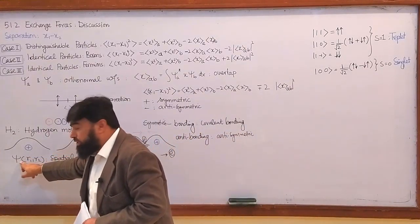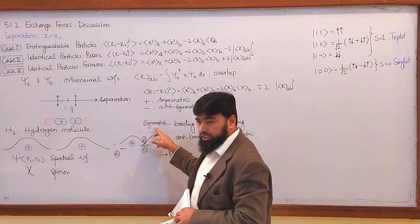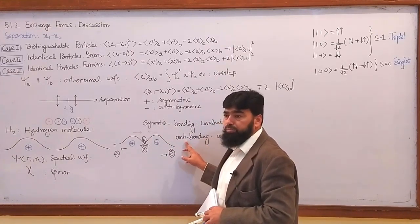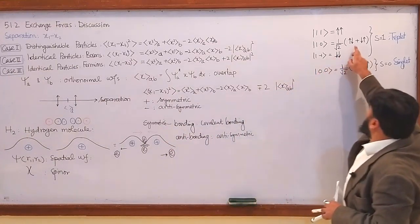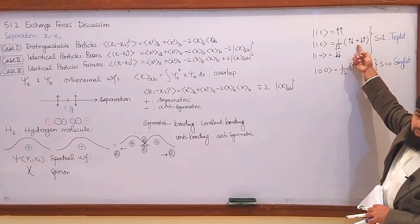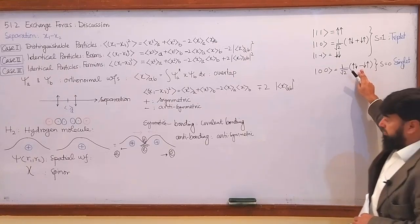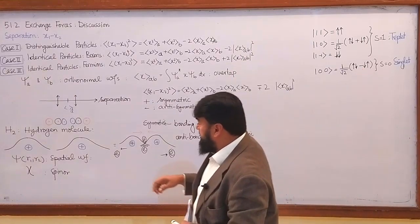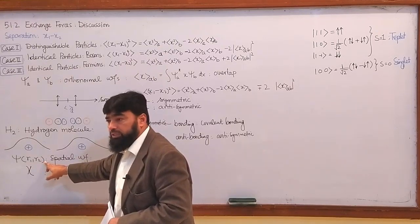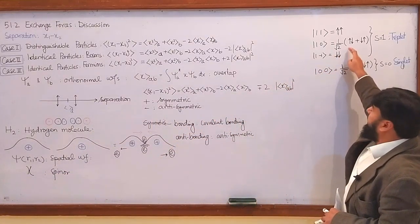Not only the spatial wave function symmetry matters. We said that when the wave function is symmetric we have attraction, and when the wave function is anti-symmetric we have repulsion and antibonding. This wave function here is symmetric because it has a plus sign, and the singlet state is anti-symmetric. We only considered the spatial wave function — symmetric and anti-symmetric — but what about the spinor? The spinor is also either symmetric or anti-symmetric.